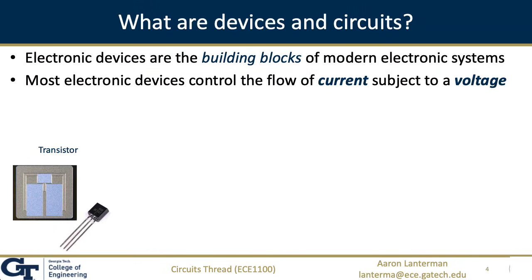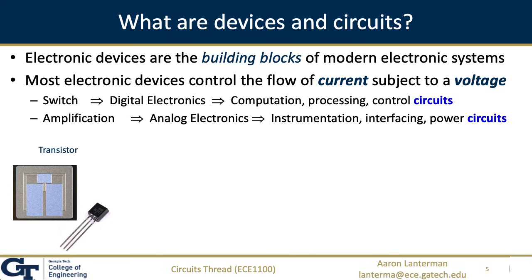Electronic devices have interesting relationships between the voltages between their terminals and the currents that flow through them. Roughly speaking, you can think about the electronic devices thread as being about why transistors act the way they do, and you can think about the circuits thread as focusing on what you can do with the transistors given the fact that they act the way they do.